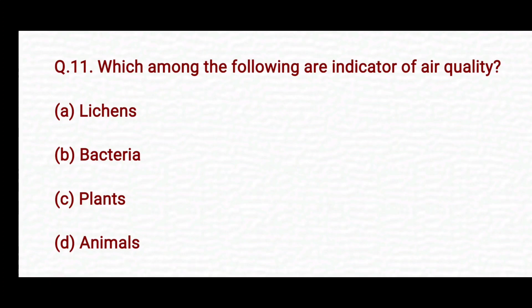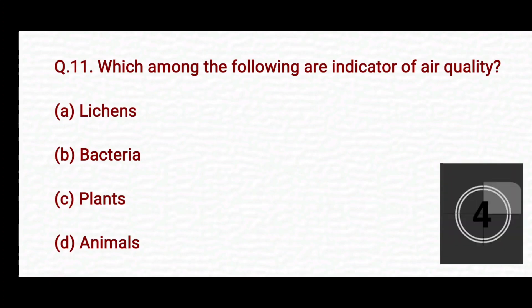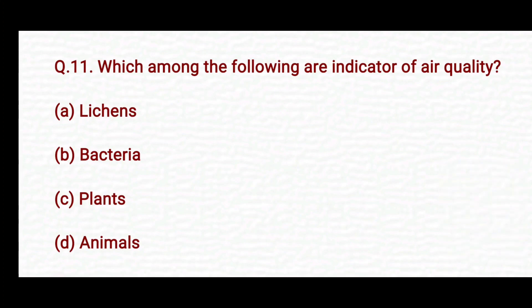Which among the following is an indicator of air quality? Option A: lichens. Option B: bacteria. Option C: plants. Option D: animals. The right answer is Option A — lichens.